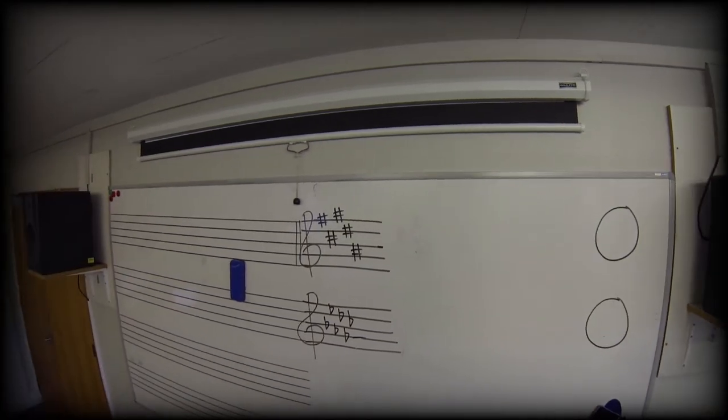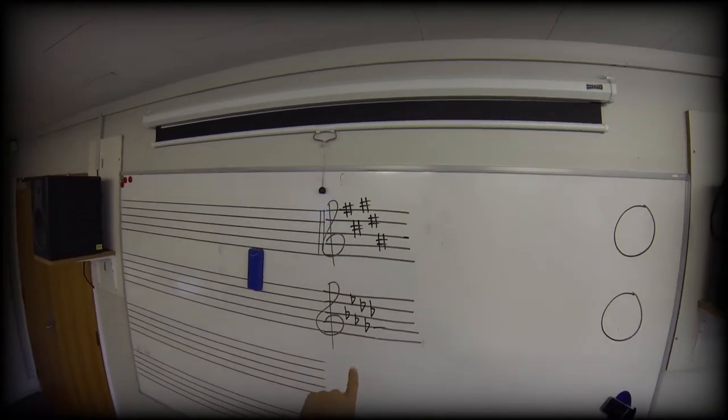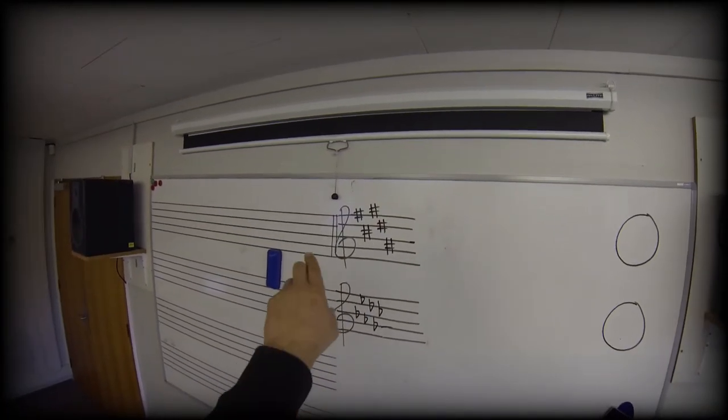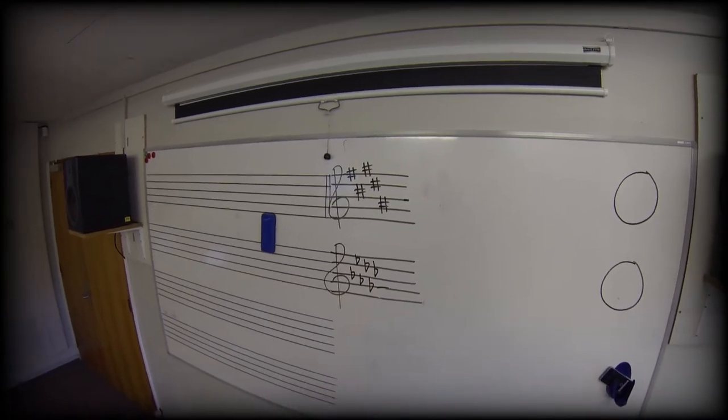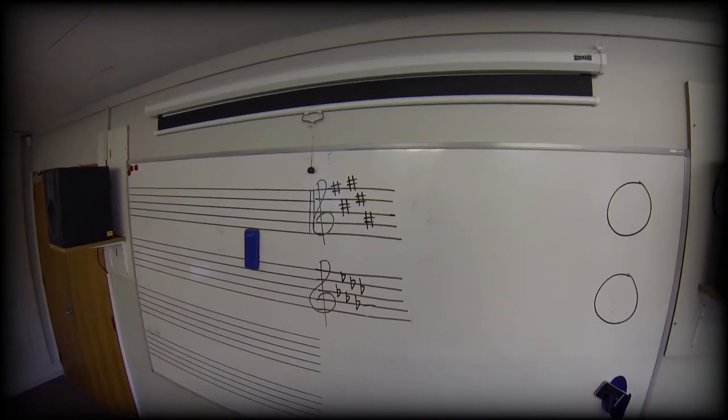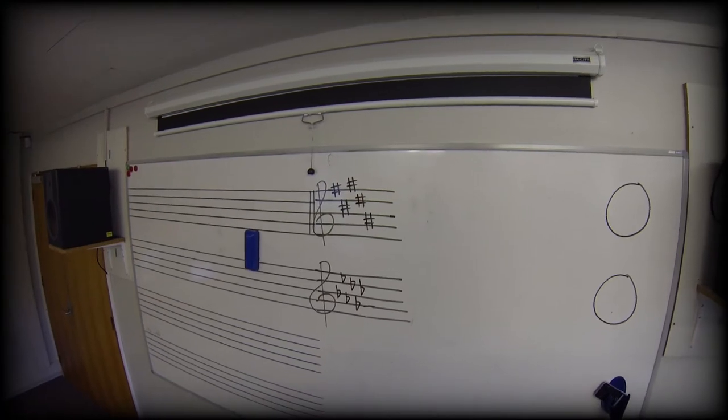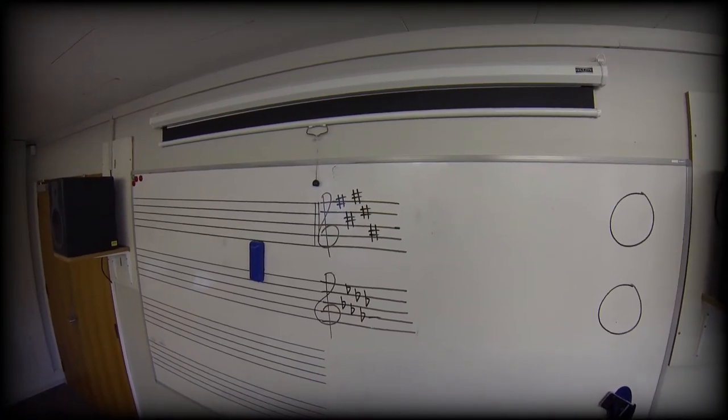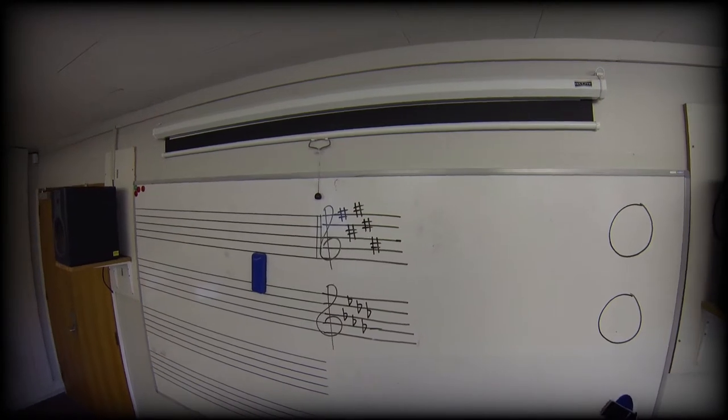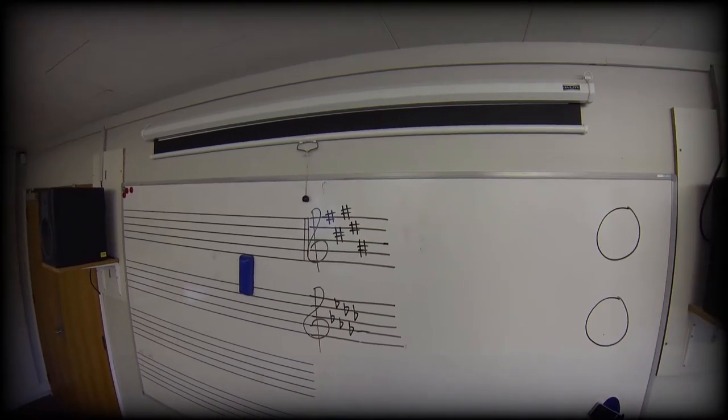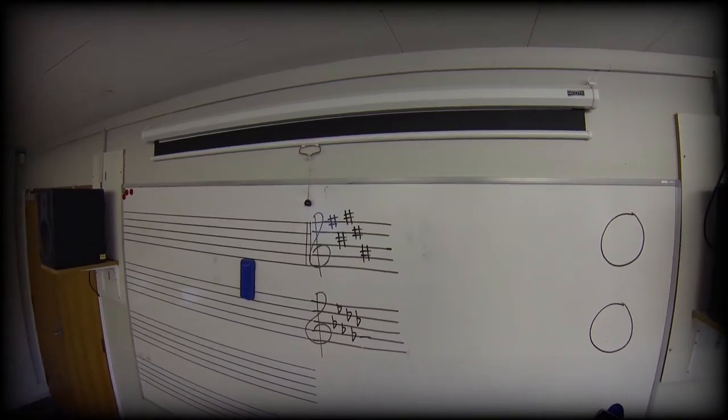So let's put it all together. I've got a couple of key signatures here. One of them has five sharps and the lower one has six flats. And each of those key signatures has two scales which are native to it. There's a major scale and its relative minor. So I'm going to find out what those scales are.